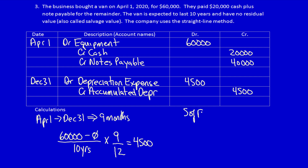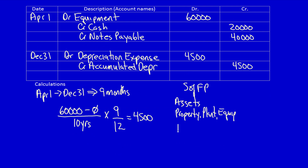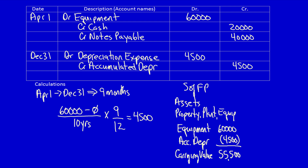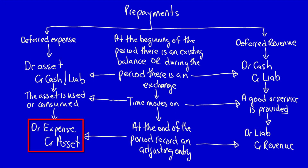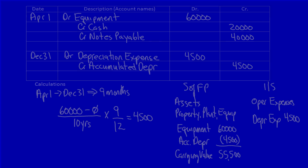Looking at the statement of financial position, under the property, plant and equipment grouping, we list equipment at its original value of $60,000, then deduct accumulated depreciation to calculate the carrying value — its future economic benefit. On the income statement, we would see operating expenses: depreciation expense $4,500. Those two amounts are reported on the financial statements at December 31st. This still matches our flowchart perfectly: instead of crediting the asset directly, we credited the contra asset, which does the exact same thing to depreciation expense.